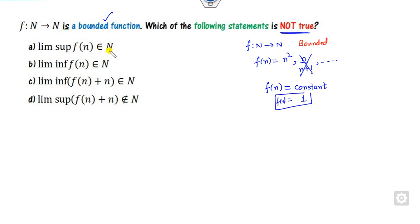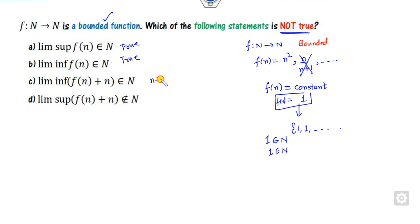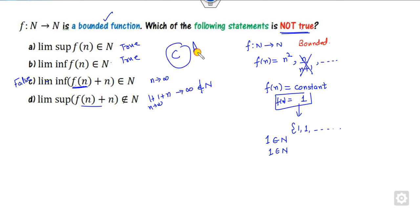The limit of the supremum is a natural number. With f(n) = 1, the sequence is 1, 1, 1, 1, ... The supremum is 1, which is a natural number — so that statement is true. The infimum is also 1, a natural number — also true. But if you take the limit as n approaches infinity of (1 + n), this goes to infinity, which is not a natural number. So that statement is false. Since we need the false statement, the correct answer is option C.